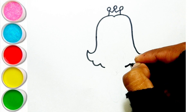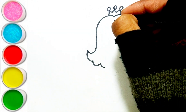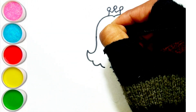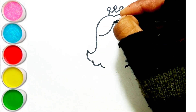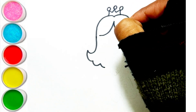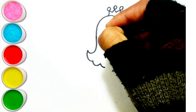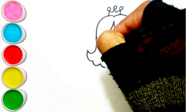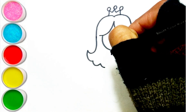Q is for Queen. Q-Q-Queen. R is for Rabbit. R-R-R-Rabbit. S is for Sun. S-S-Sun. T is for Toad. T-T-Toad.